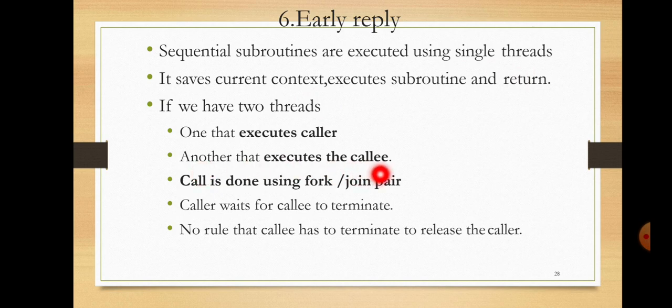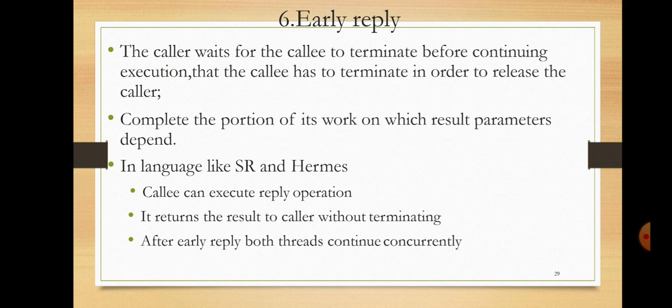The call is done using the fork-join pair. Normally, the caller has to wait for the callee to terminate before continuing execution — the callee must terminate in order to release the caller. The callee must complete the portion of its work on which the result parameter depends before the caller can execute its next steps.